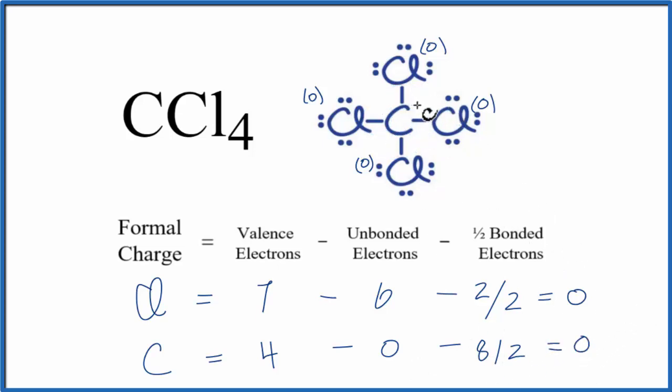So the formal charge on the carbon, that is 0. So all of our formal charges here are 0 for the CCl4 Lewis structure. And we would expect the formal charges to be 0 or very close to 0 for the most favorable or likely Lewis structure.